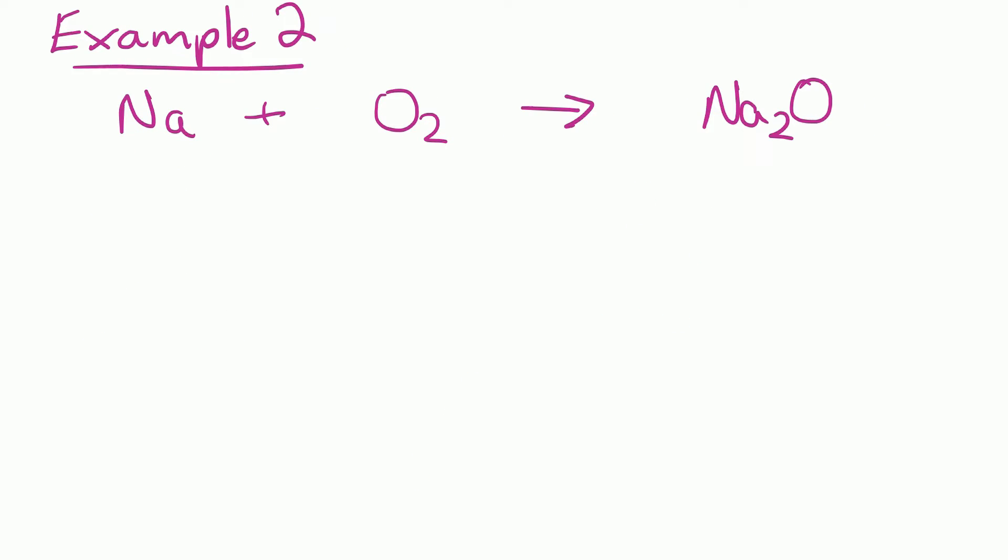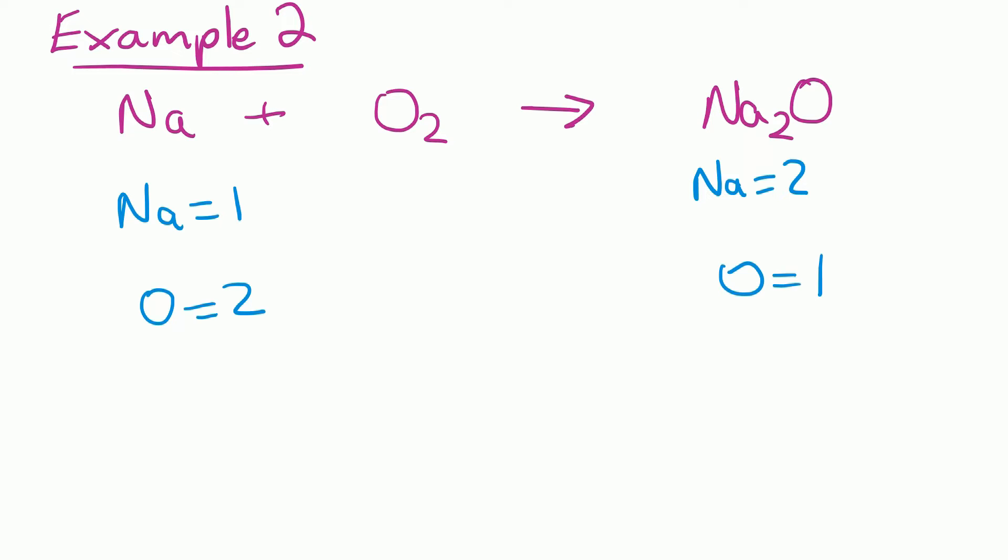Let's have a look at example two. We start off the same way, writing down how many of each type of atom on each side. We've got one Na on the left and two Nas on the right, two Os on the left and one O on the right. So the first thing we'll do is try to balance the Nas — we'll put a big two to multiply the Na, so now we've got two Nas on each side.